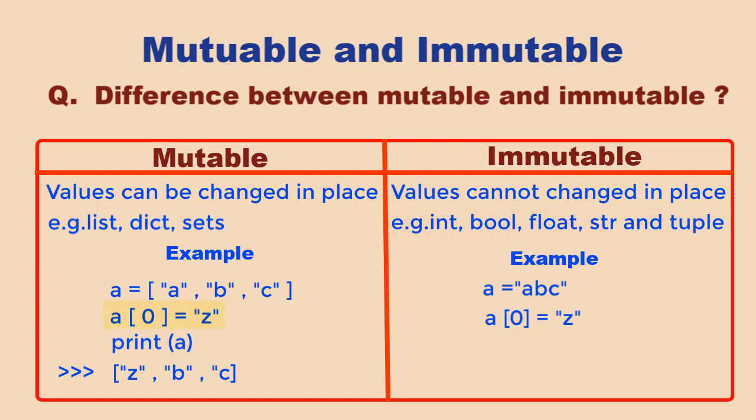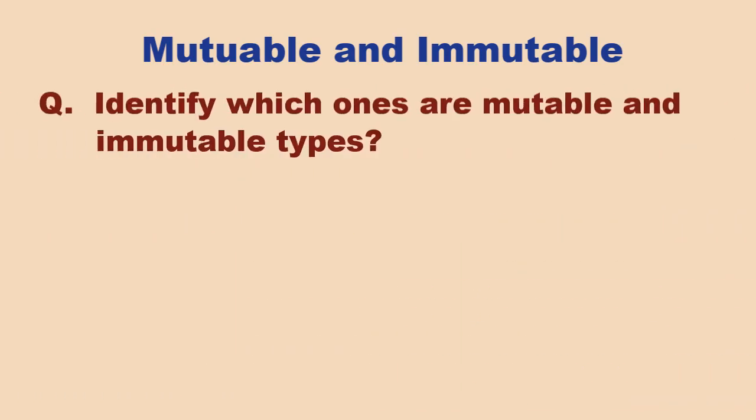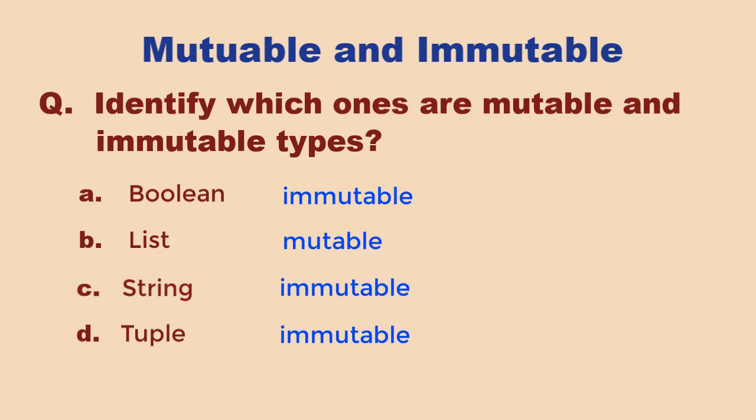Let's see this in an example. Like over here, we can change any of the values of the list. But if you have a string data type, you cannot change any of the characters of a string. The question typically asked is this: identify which ones are mutable and immutable in Python. Here, only list is mutable; remaining all are immutable.